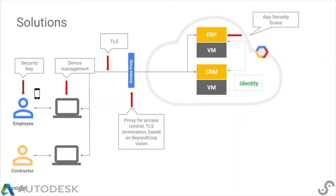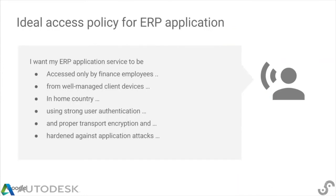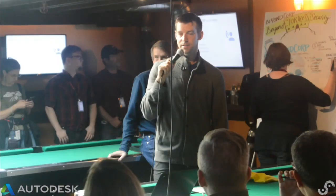These are the solutions that Google would use. In the ideal BeyondCorp world, you'd want an ERP application to be accessed only by finance employees, not contractors, from well-managed client devices. You'd have a device inventory and a security key to confirm it's a human being operating the laptop, not a botnet like Zeus. You'd know what IP address the user is accessing from, use strong user authentication via security key, proper transport encryption with TLS, and be hardened against application attacks with a security scanner.